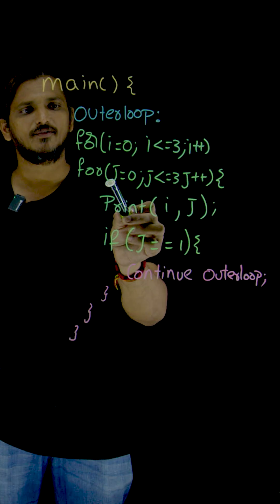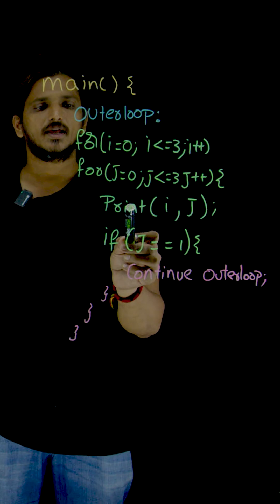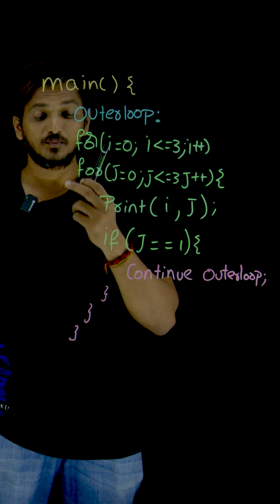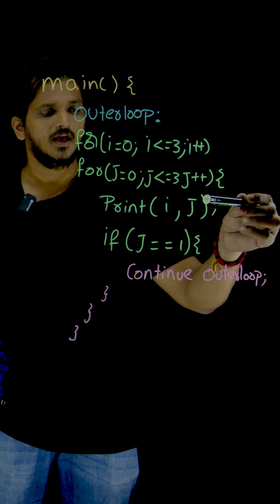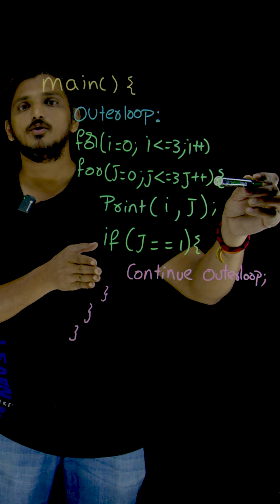Inside this loop, we are having j is equal to 0, j less than or equal to 3, j plus plus. Inside this loop, we are having print statement and a conditional statement. Understand properly. This print statement and conditional statements are inside the inner loop.